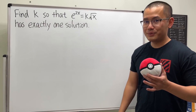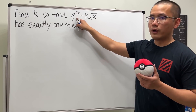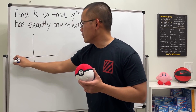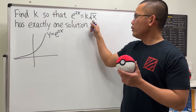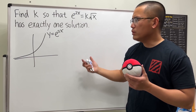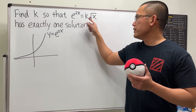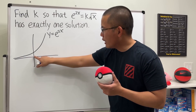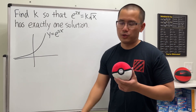Let's take a look at the graph. e^(2x) is just an exponential curve, y = e^(2x). If we look at just the square root of x it looks like this, but we don't know if they touch. If k is large enough, k times the square root of x goes higher and we'll cross the exponential curve two times — that's not what we want.